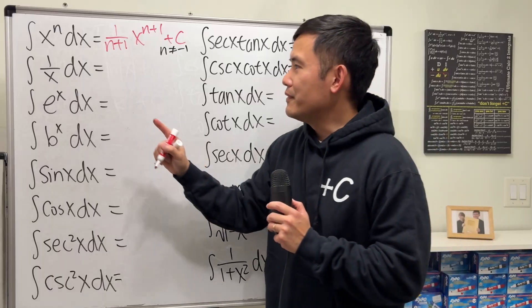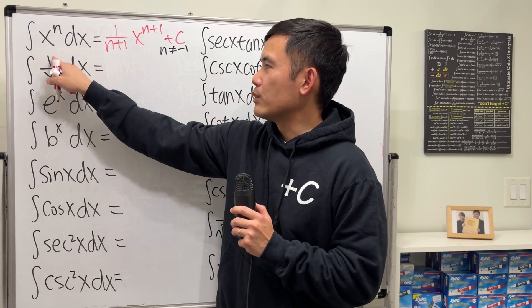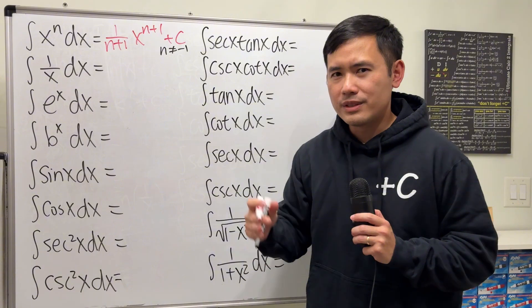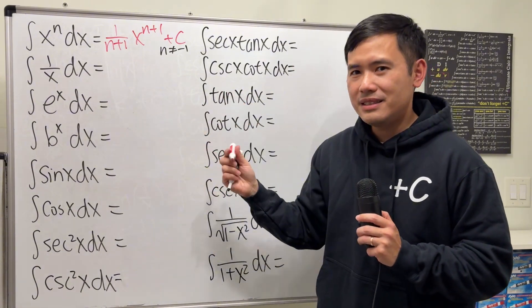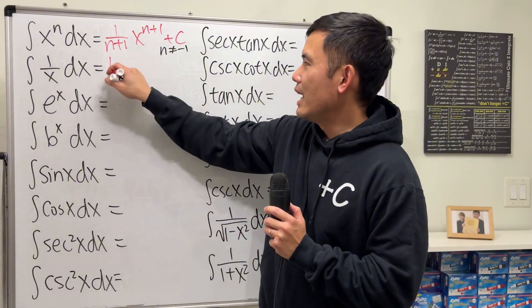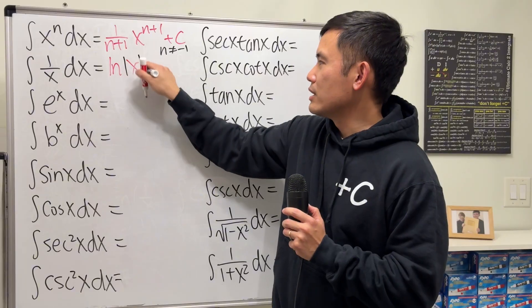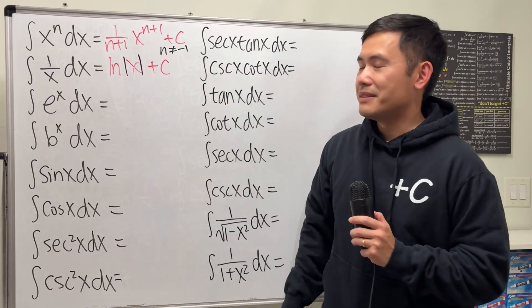Now if n is equal to negative 1, then we are looking at 1 over x. What's the answer for that? The answer is ln - yes, ln x. And then you attach an absolute value of it and then plus C.